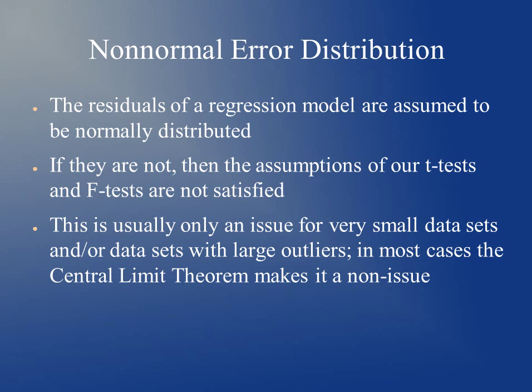Another violation we could have is if the errors are non-normally distributed. In our regression modeling we assume that errors are normally distributed. If they are not, then our assumptions for t-tests and F-tests are not satisfied, so the p-values we get won't be accurate. But oftentimes if we have large enough data sets without large outliers, the central limit theorem makes this a non-issue. This is only a problem if we have very small data sets.